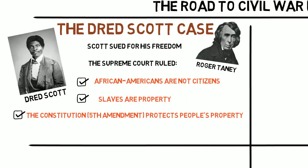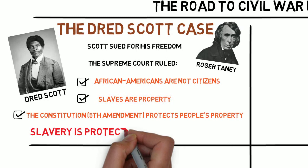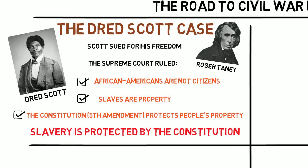Secondly, Taney wrote that Dred Scott, a slave, was his owner's property, and the Fifth Amendment of the Constitution protects a citizen's right to their property. In essence, what this decision said was that slavery was considered a constitutional right that the federal government could not take away. This meant that now slavery was technically legal throughout the whole United States.